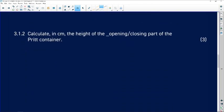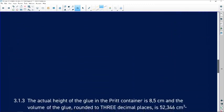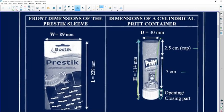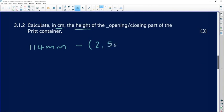Calculate in centimeters the height of the opening or the closing part of the Prit container. So we want the height in centimeters. So if the total height here is 114 millimeters, we just want this part of it. So we've already been given this part and this part of it. So we're going to say 114 millimeters. We need to then add these two together, which is 2.5 plus 7, 2.5 centimeters plus 7 centimeters.